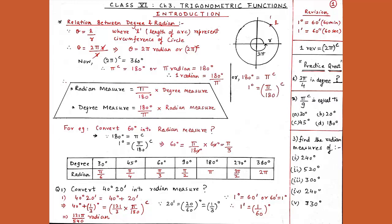From here, 1 radian equals 180 degrees upon π. So when we have to convert radian into degree, we multiply by 180 degrees upon π. And when we have to convert degree into radian, we know 180 degrees equals π radian, so by unitary method 1 degree equals π upon 180 radian. Whenever we convert degree into radian, we always multiply by π upon 180.